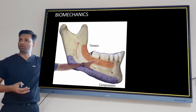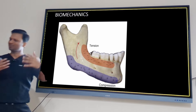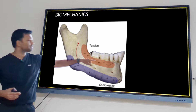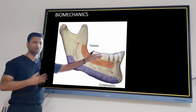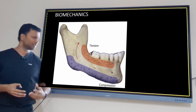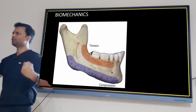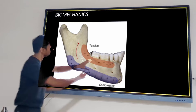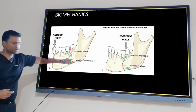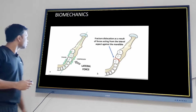If you plate at Champy's line, the plate can withstand the forces. Placing a plate at the superior border is problematic: first, screws will perforate tooth roots; second, tensile forces will eventually break the plate. Compressive forces at the inferior border mean that even without a plate there, the segments press together, so plating at the tensile zone is more critical. Inferiorly there is compression; superiorly there is tension.